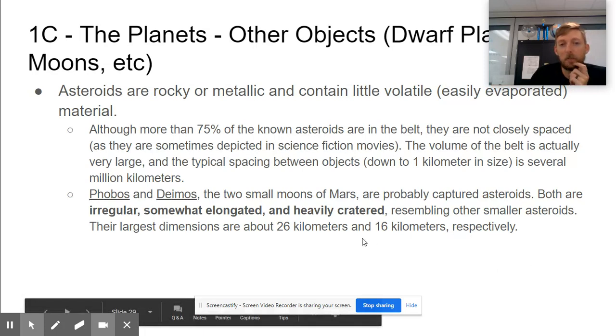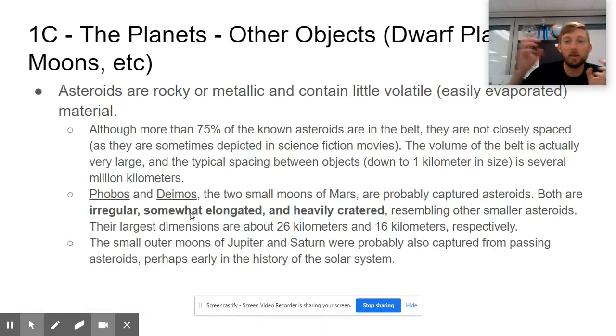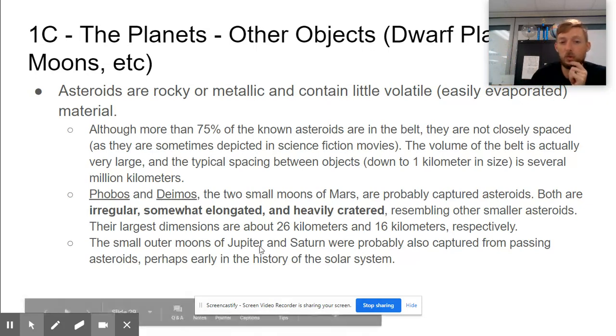Some planets get moons in different ways. Our moon was created by a collision of two planets, and then the stuff broke off and formed the moon and the Earth. But it could have just been that an asteroid came close and got caught in the orbit of gravity, suddenly becoming a satellite or a moon.